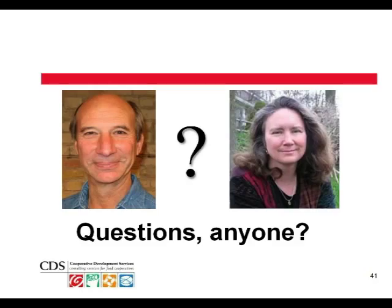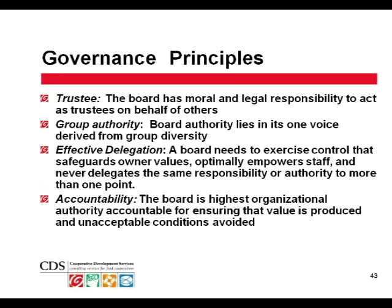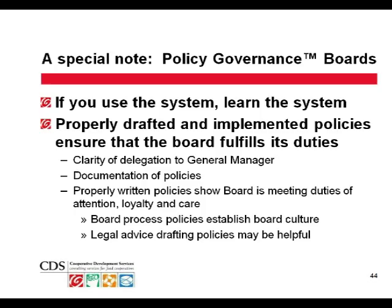Let's move into putting this into practice and talking about how all of this comes together. At the outset we said the board's goal is excellence in governance. Understand your role. Do your homework. Participate actively. Create a board culture that fosters excellence. Emphasize deliberation, transparency, and vision. See yourselves as trustees. Learn to participate in group process. Let your voice be heard. Listen actively. Change your mind, then change it again — but all the while, hold fast to your principles. And listen, listen, listen. Delegate authority. And finally, be accountable. Just a special note on policy governance: if you use the system...